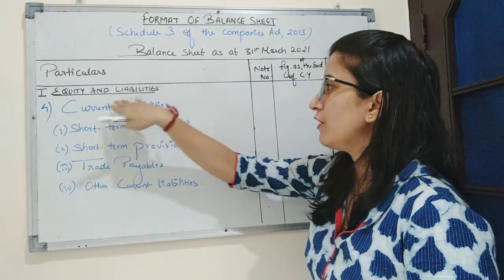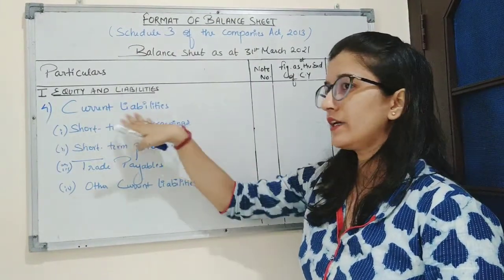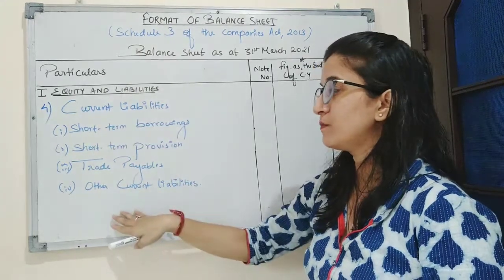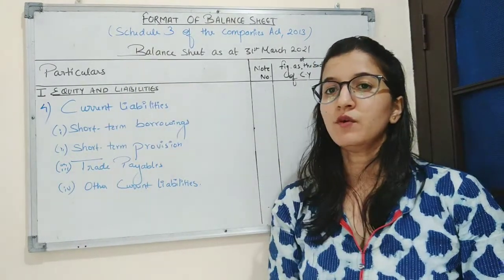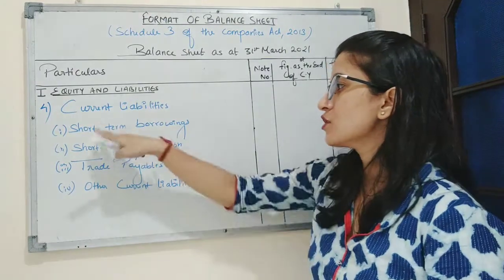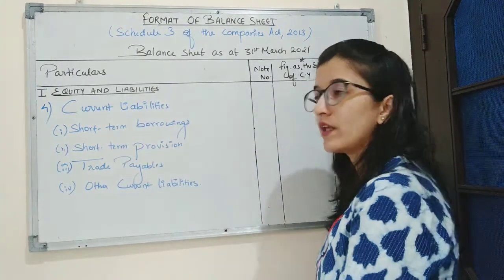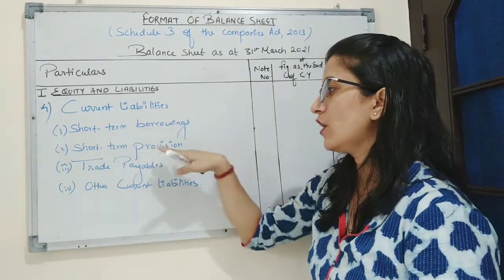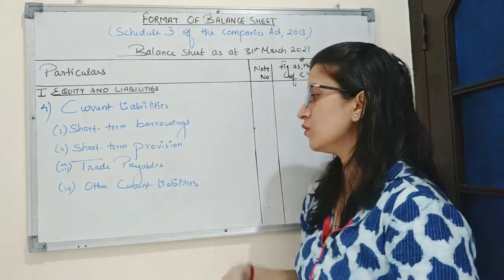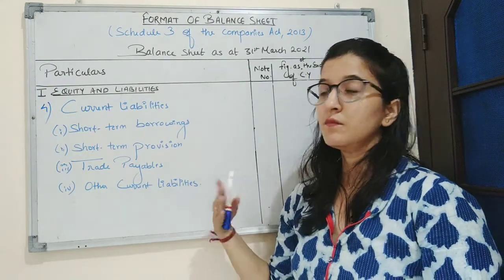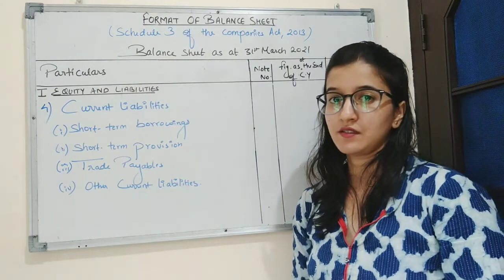The last part of equity and liabilities is current liabilities. Under current liabilities there are four sub-parts: first is short-term borrowings — short-term loans borrowed for a period less than one year; second is short-term provision; third is trade payables, which includes creditors and bills payable; and the last one is other current liabilities.